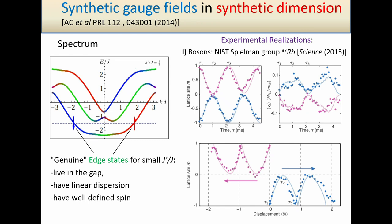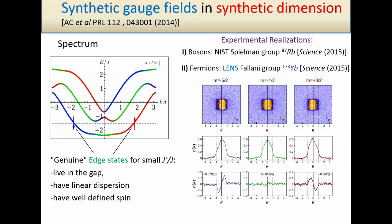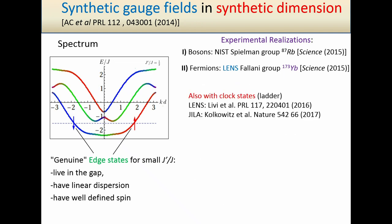One of the first experimental realizations was at NIST with Ian Spielman's group with rubidium. They observed the skipping orbit and the chirality — one spin state on one species is going on one side and the other is propagating in the opposite direction. There was also another experiment at Florence with fermions, where Marcello and Peter Zoller were also involved in theory. The system is slightly different in the sense that they use different spin states — this atom has six internal states, as we learned yesterday. But again, the similar chiral behavior of the edge state was clear to observe.